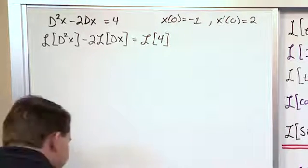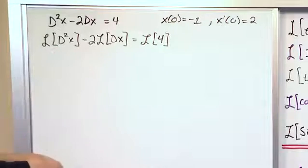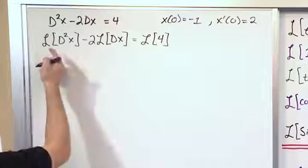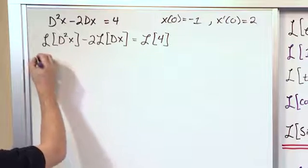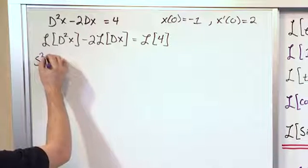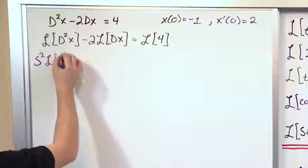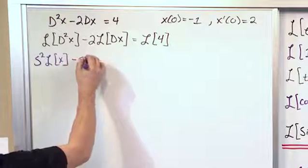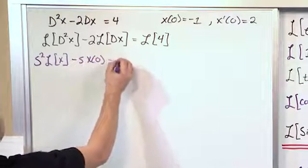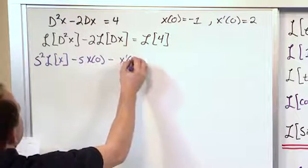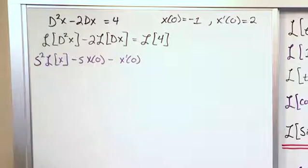So what we're going to do is apply the Laplace Transform just to this first term here. Since it's the second derivative, it'll read as s² times Laplace Transform of x minus s times x(0) minus x'(0). All of this comes from just that one term.